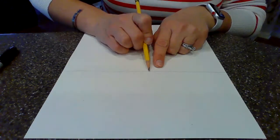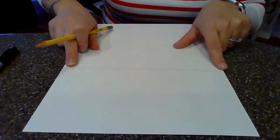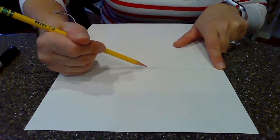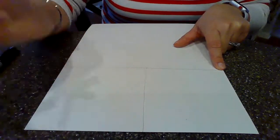So the next thing I'm going to do is I'm going to find about halfway down or halfway across my horizontal line, and I'm going to draw myself a vertical line down my paper.